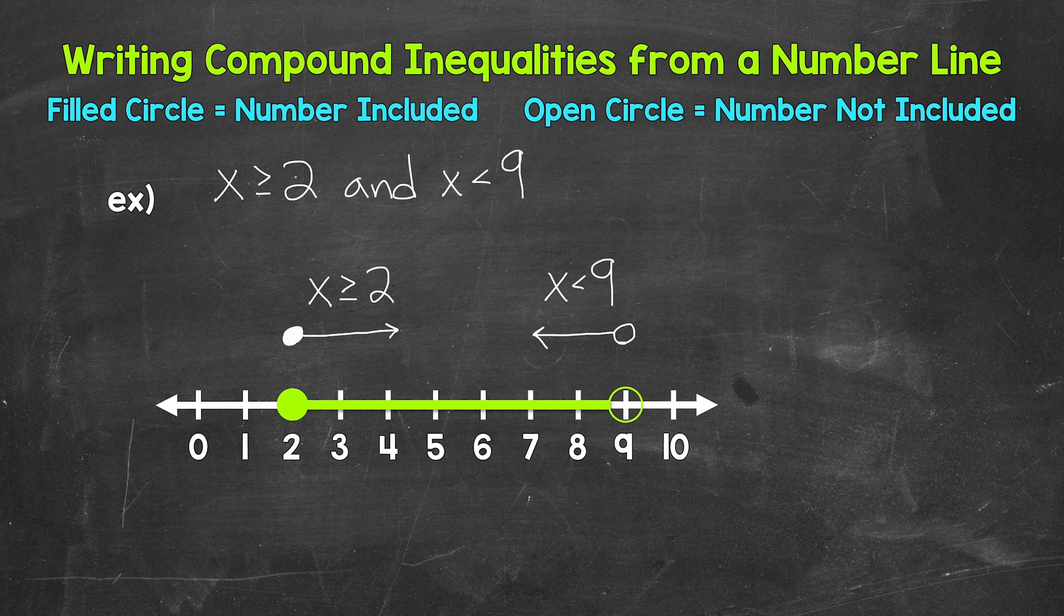Now remember, we can write AND compound inequalities without the word AND. So we can write this as x—I like to write the variable down first, and it goes in the middle. So again, x is greater than or equal to 2 and less than 9. And that's our compound inequality written out from the number line.